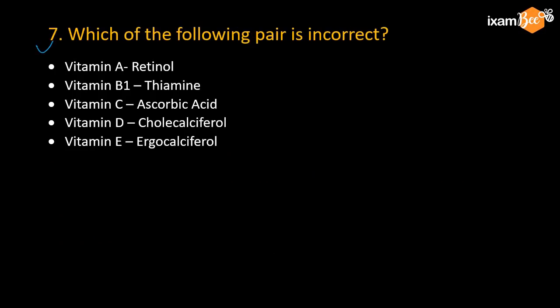Question number 7: which of the following pairs is incorrect, matching the common name of vitamins to their scientific name? The options are: Vitamin A — retinol, Vitamin B1 — thiamine, Vitamin C — ascorbic acid, Vitamin D — cholecalciferol, Vitamin E — ergocalciferol. Which one is wrong? The right answer is Vitamin E — ergocalciferol is incorrect for Vitamin E.